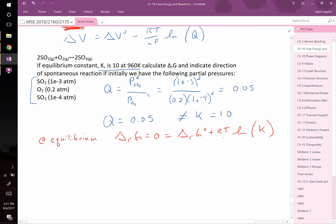We know what k is. We know r, we know t. The only thing we don't know is delta RG0, but we can solve for it. So, delta RG0 is going to be equal to negative 8.314 joules per mole kelvin multiplied by 960 kelvin. Kelvins cancel out. So, delta RG0 multiplied by the natural log of 10. And when we plug that in, I find that the value for delta RG0 is negative 18,378 joules per mole.